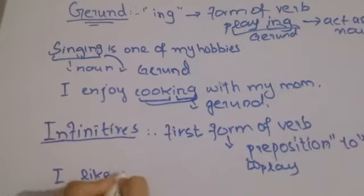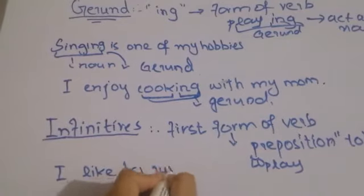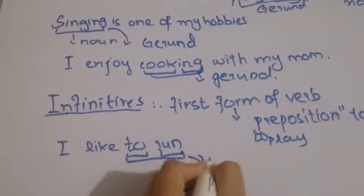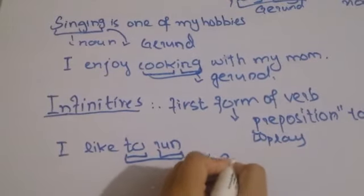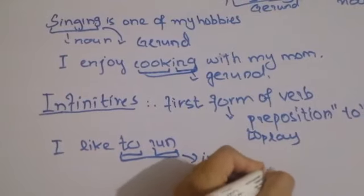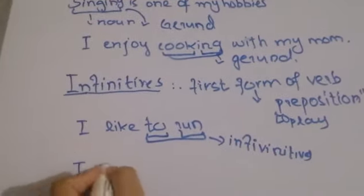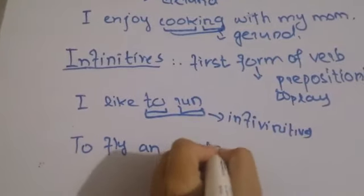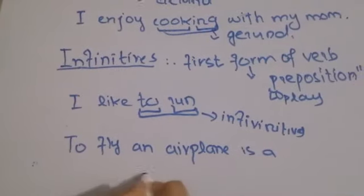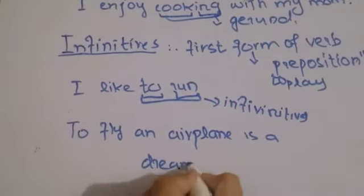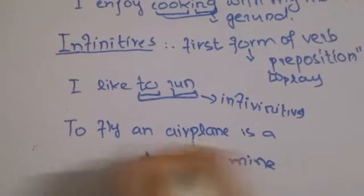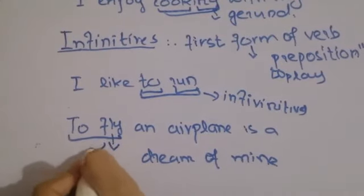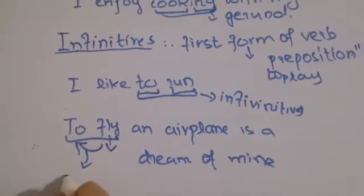For example: 'I like to run.' Here, 'run' is the first form of the verb, and with 'to', it becomes 'to run' — an Infinitive. Another example: 'To fly an aeroplane is a dream of mine.' Here, 'to fly' is the Infinitive — the first form of the verb with the preposition 'to'.